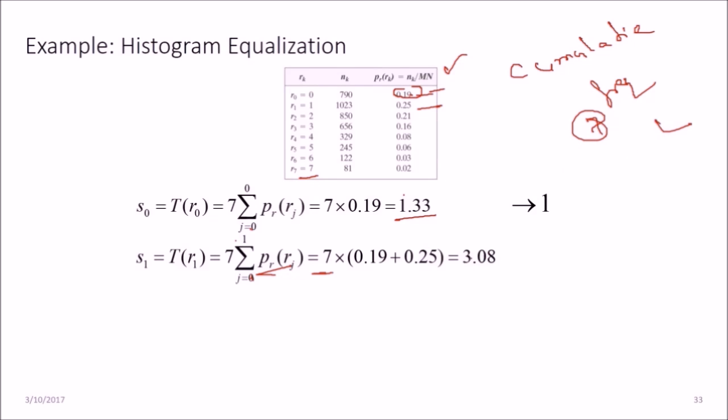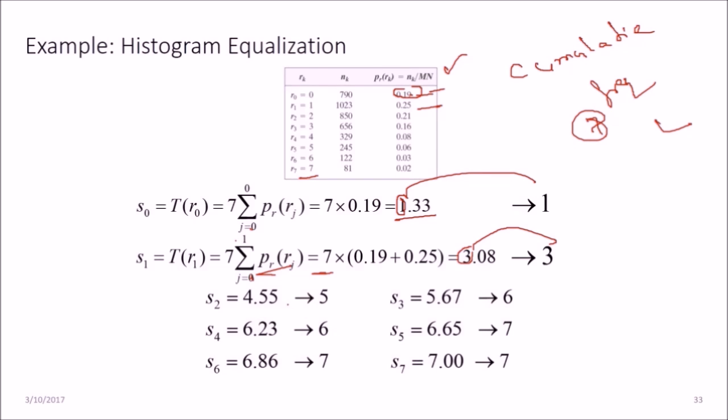Cumulative frequency, so we add 0.19 and 0.25, then multiply by 7, and 7 is nothing but the highest level. This will give you 3.08, so we will take 1, we will take 3. Next, in this similar fashion, let me give you this S2. That will be 7 times 0.19 plus 0.25 plus this 0.21, because this is cumulative. So that will be the value which is 4.55.